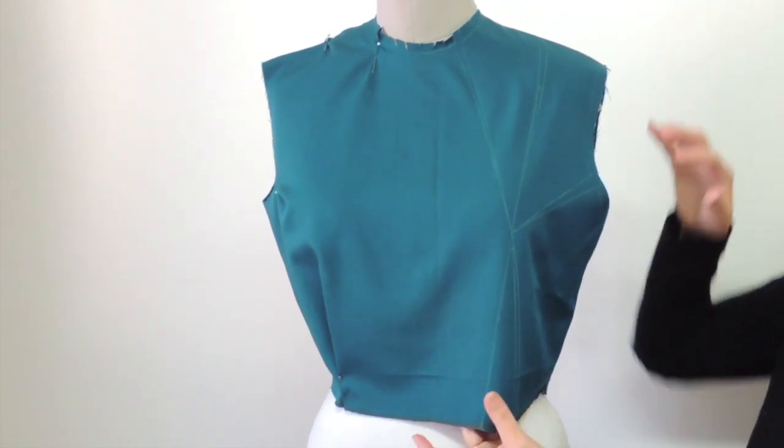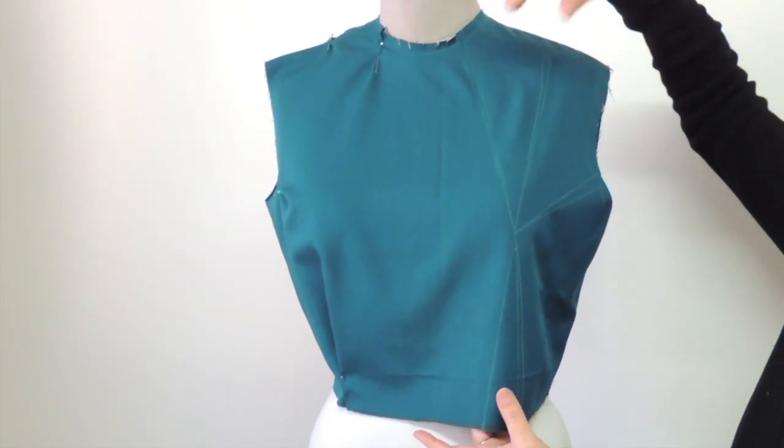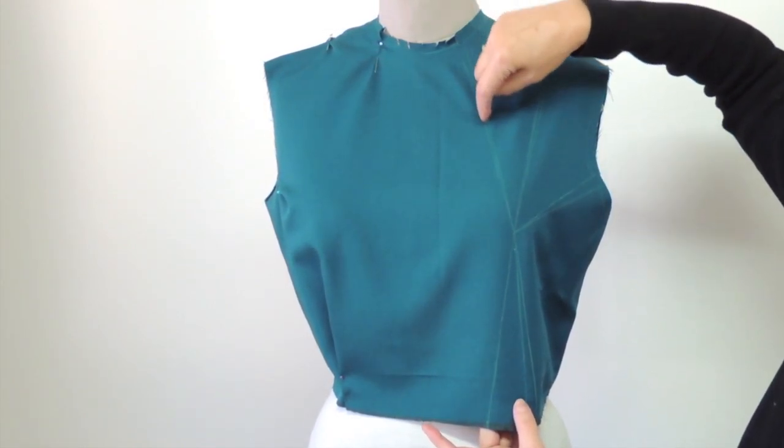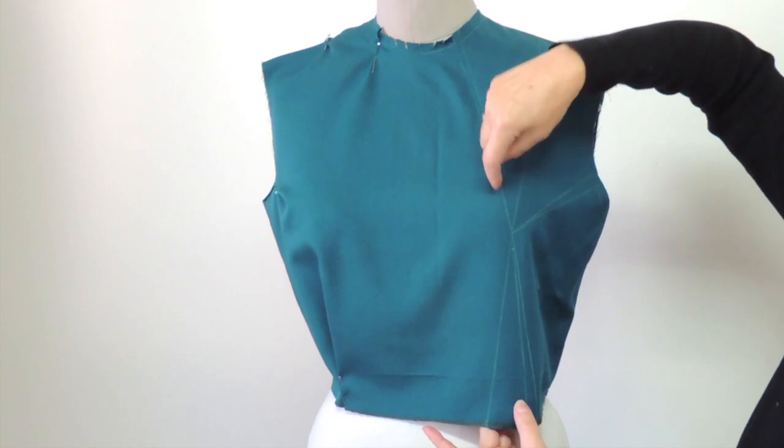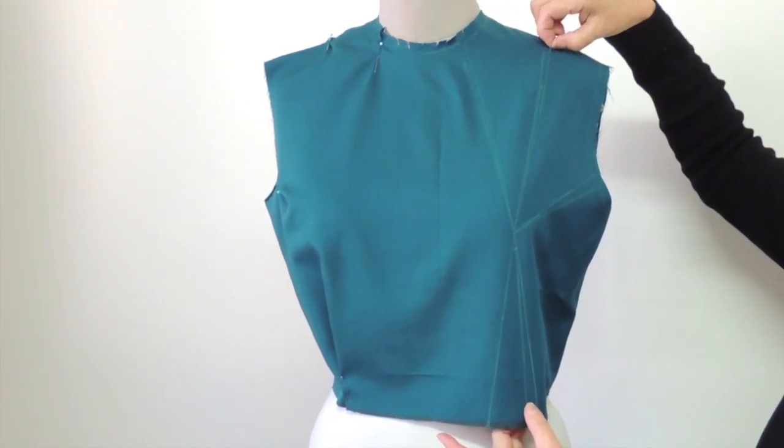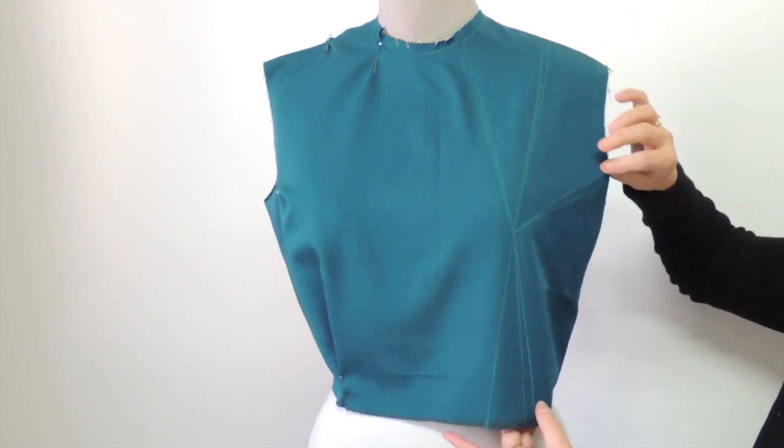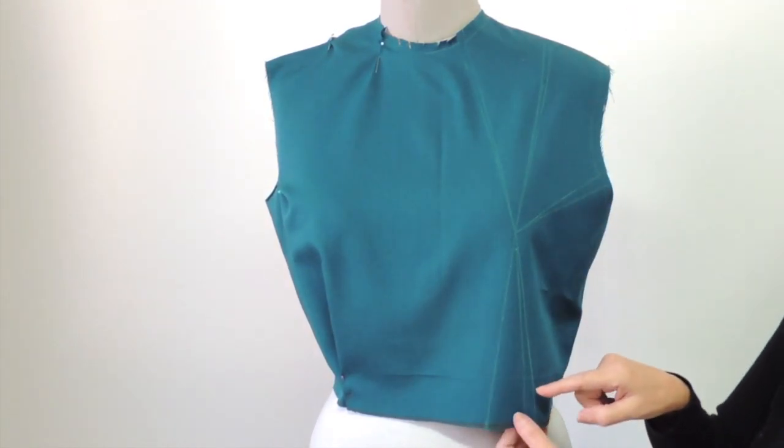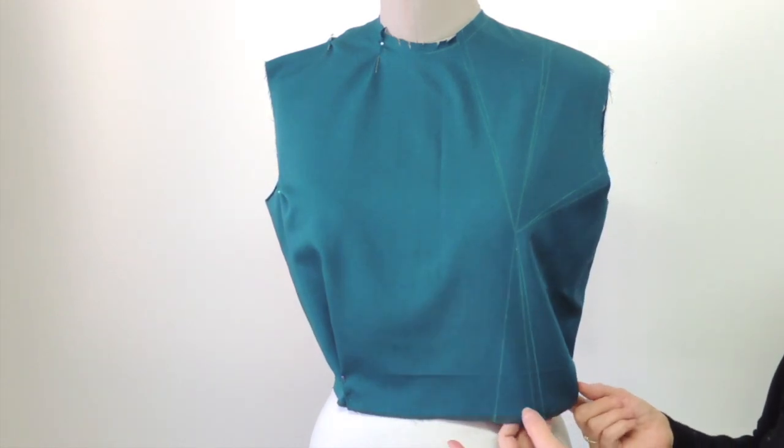And on the other side, I did the pivoting that we will do for dartless bodice. I sent part of the dart to the neckline. I left a little bit at the shoulder. I sent a big part at the armhole and the rest of it, I sent it down at the waist.